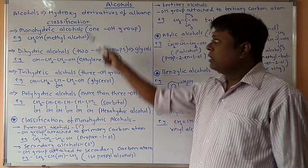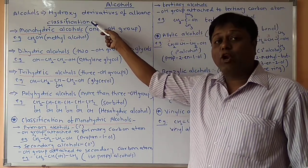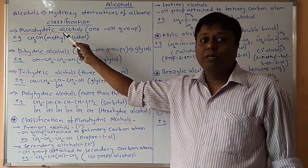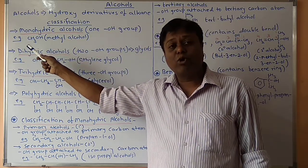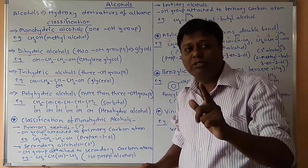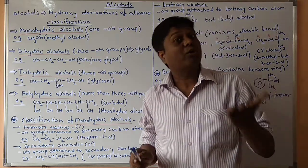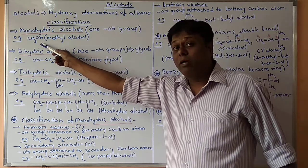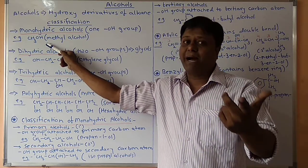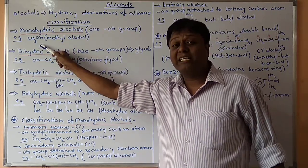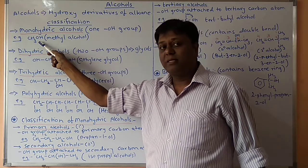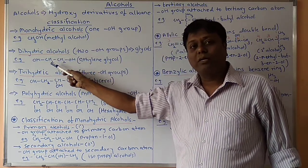The classification of alcohols depends on the hydroxy group attached. First: monohydric alcohols. As the name suggests, mono means single and hydric refers to the OH group, meaning one hydrogen atom in alkane is replaced by a hydroxy group. The example is CH3OH — methane CH4 with one hydrogen replaced by OH — which is called methyl alcohol. This is a monohydric alcohol.